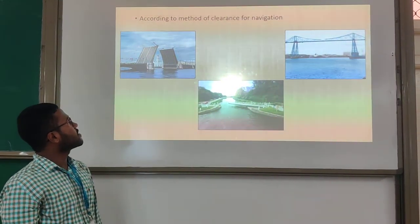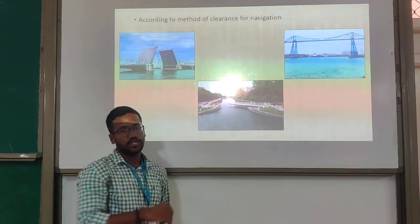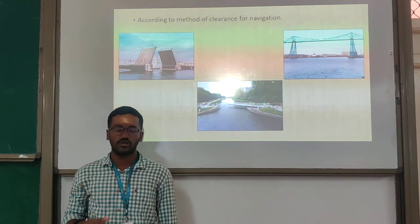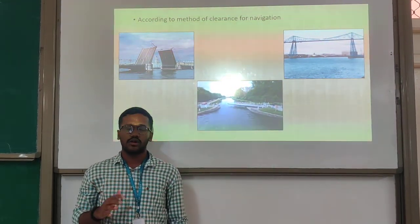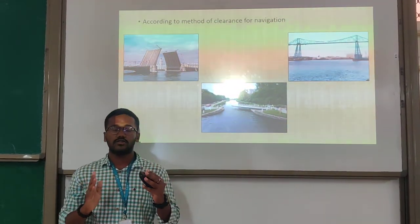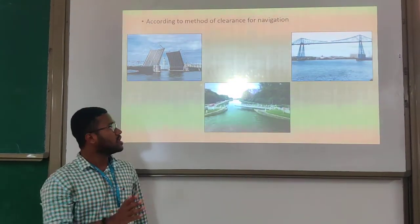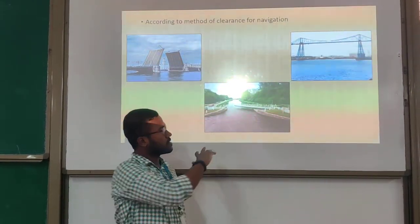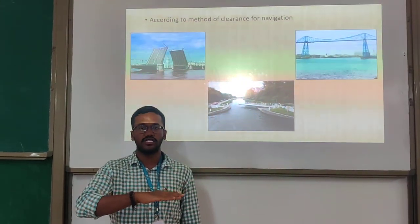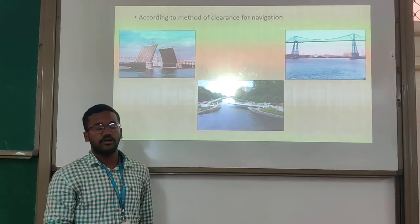According to the method of clearance for navigation, there is the movable type of bridge. This type of bridge is usually constructed over rivers or lakes. The bridge will move in the upward direction to allow ships to pass. In another type, the bridge will move sideways like a door, rotating about one end to allow water traffic movement.